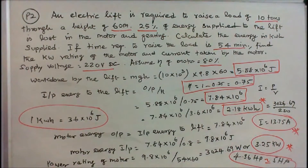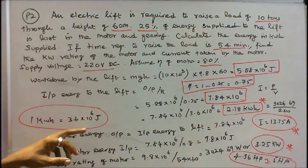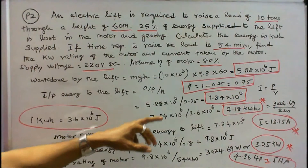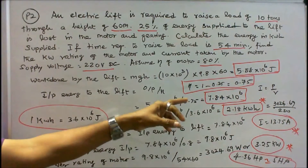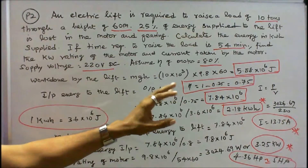We know that 1 kWh is equal to 3.6 into 10 power 6 joules. Therefore 7.84 into 10 power 6 divided by 3.6 into 10 power 6, that is equal to 2.18 kWh.